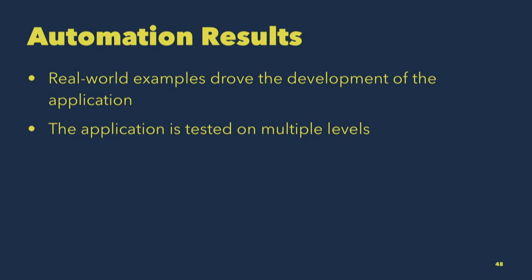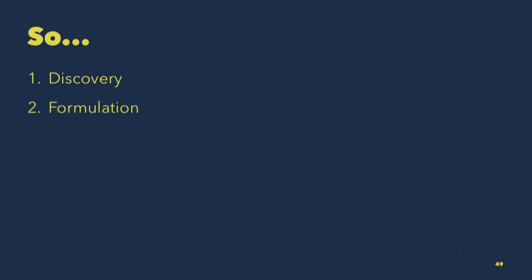At the end of the automation stage, real-world examples drove the development of the application through a combination of TDD and BDD. The application is now tested on multiple levels — we went through our double-loop lifecycle with TDD and BDD together. So: discovery — get your team together, get everybody involved, have conversations about what the application should be. Formulation — document all those real-world examples. Automation — actually build the application using those real-world examples. And then your client will be super happy because when you give them the product, they'll say 'yes, this is exactly what we expected.' You don't have to go back and make nearly as many changes as previously.